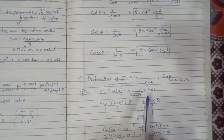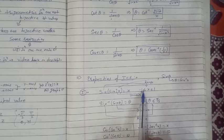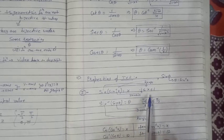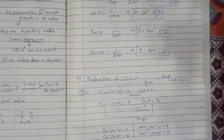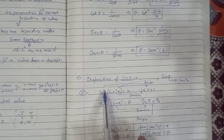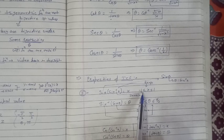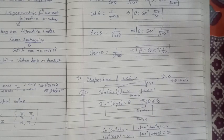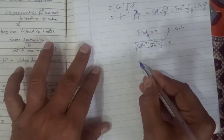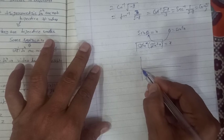As per the first property, sine(sine inverse x) = x, but this is true within the restriction that x is greater than or equal to −1 and less than or equal to 1. Outside this range it is not true. This should also be understood in terms of range and domain. If you look at the sine function's graph and plot it, the output always lies between +1 and −1.